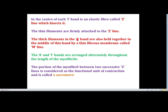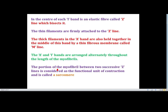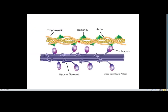The A band is the anisotropic band, which is the myosin band. The A and I bands are arranged alternately throughout the length of the myofibrils. The portion of the myofibrils between two successive Z lines is called the sarcomere. The Z line is considered as the functional unit of contraction and is called the sarcomere. The sarcomere contains myosin filament, actin filament, tropomyosin, troponin, and other muscle proteins.